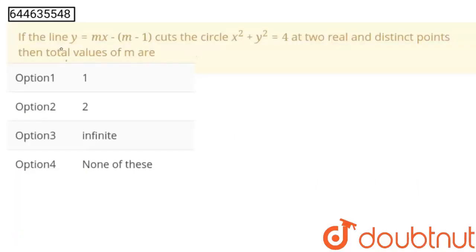Hello students. The question is: if the line y = mx - m - 1 cuts this circle at two real and distinct points, then find the total values of m. We have four options and we have to say which of the following options is correct.